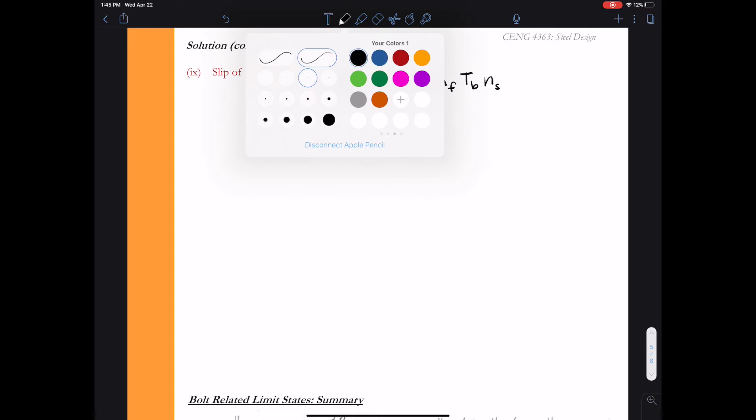So that will give us the value or the capacity per bolt. So remember the Rn indicates per bolt.